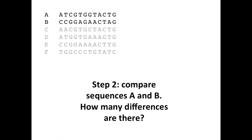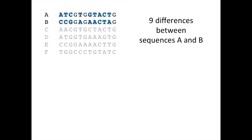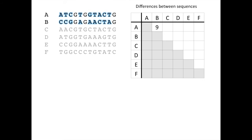With the sequences aligned, we can now compare each sequence with one another. We'll do this in a pairwise fashion, starting with sequences A and B. Our next step is to determine how many differences there are between sequence A and sequence B. When we do this, we see that in three positions the sequences are the same and in nine positions they are different. So we have nine differences between sequences A and B. We can start building a table of all the differences between the sequences, and our first entry is nine differences between A and B.